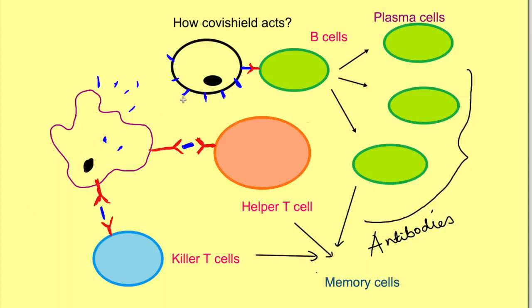The body has a mechanism that once these B cells and T cells identify a particular antigen, they create a memory of it. There are memory B cells and memory T cells, such that if there is an exposure to the antigen another time, these memory cells can respond faster.